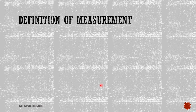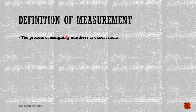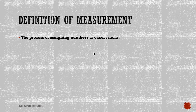First, let's define measurement. In statistics, measurement has a somewhat different definition. Measurement is the process of assigning numbers to observations. Normally when one hears the term 'measurement,' you may think in terms of measuring the length of something.